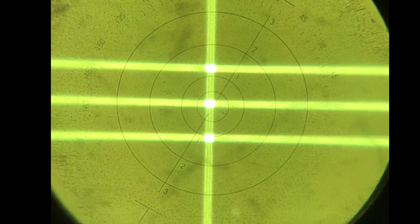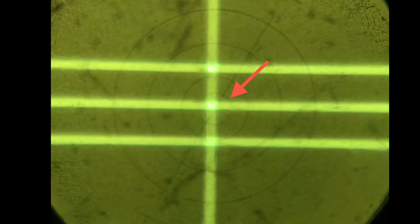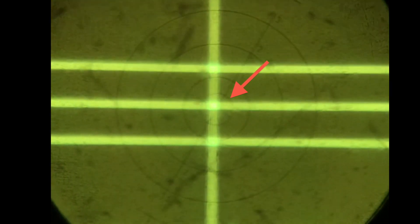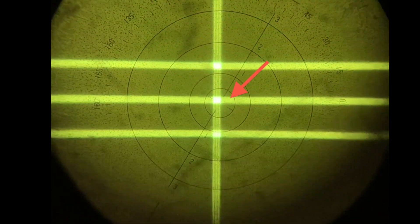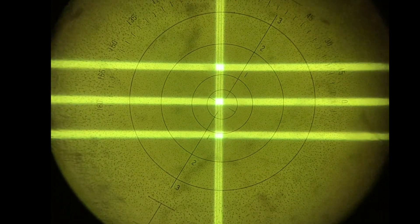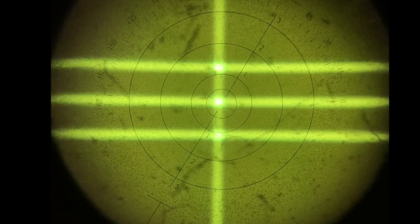The first step in manual lensometry is focusing our reticle. The best way to focus the reticle is to turn it all the way plus, and then slowly turn it back towards plano or minus until it comes into crisp focus. By focusing our reticle first, we ensure that we are reading the prescription correctly.